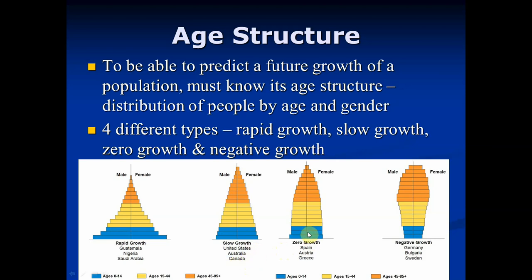Zero growth means a population that's neither growing nor decreasing — births approximately equal deaths — with fewer children and more people beyond reproductive age in the age structure. Negative growth means a country's population actually declines over time: very few children in the 0-14 age group, and possibly 40-50% of the population beyond reproductive age. Germany, Bulgaria, Sweden, and Russia are all post-industrial negative growth countries whose populations have been decreasing through time.